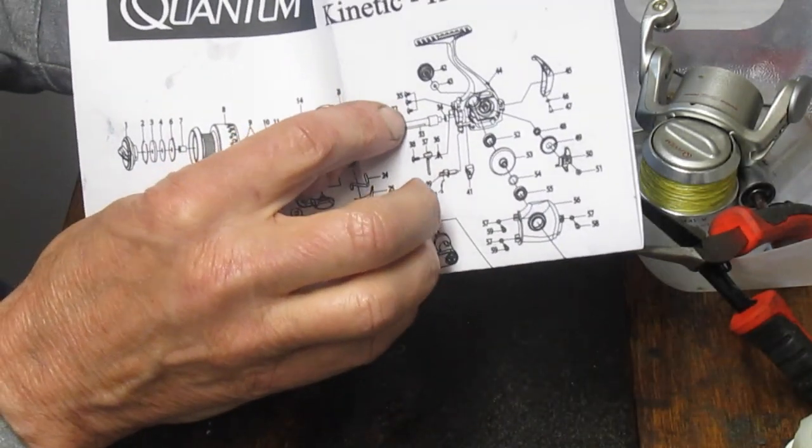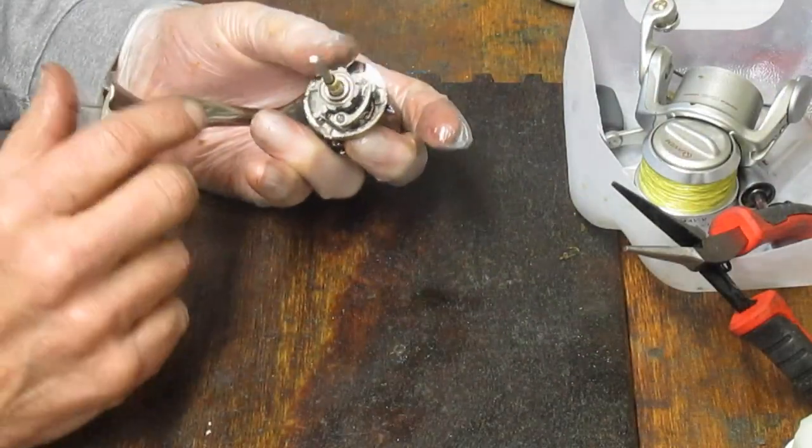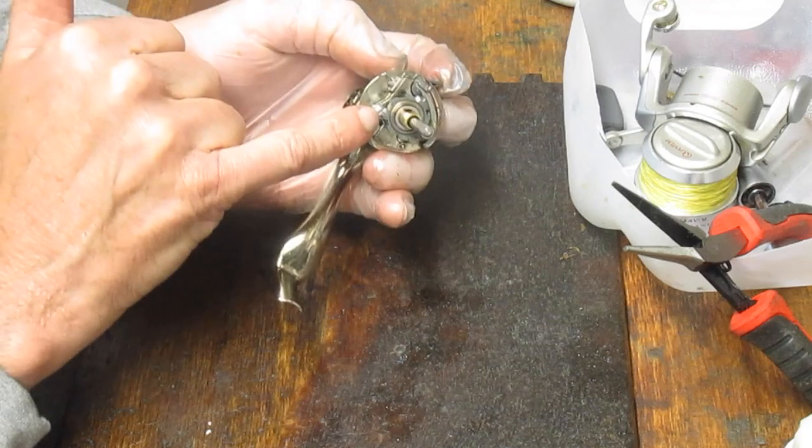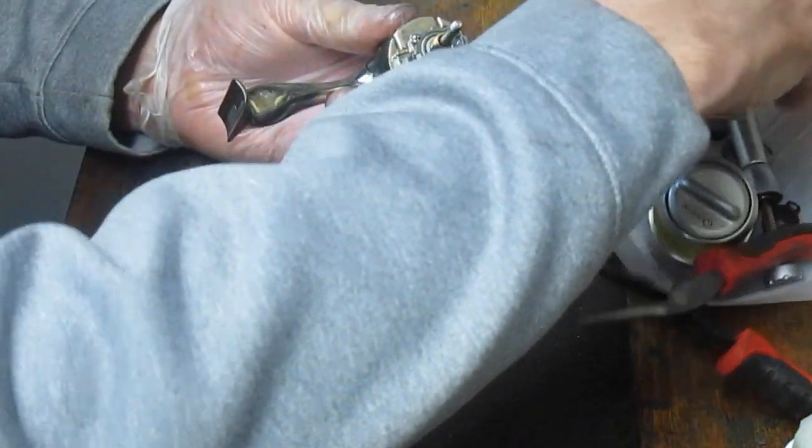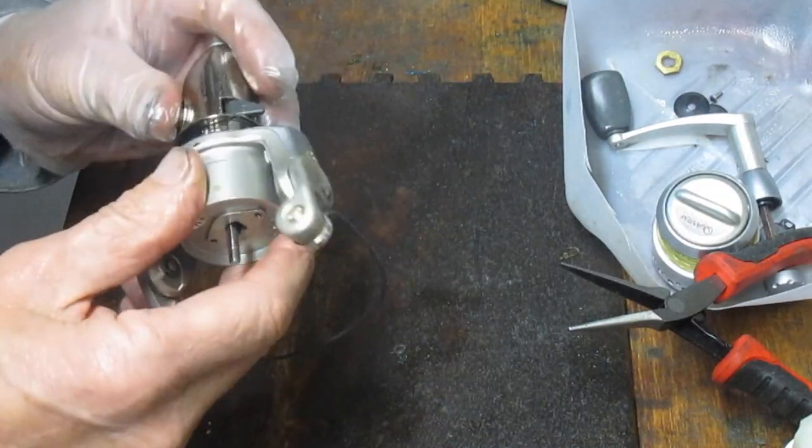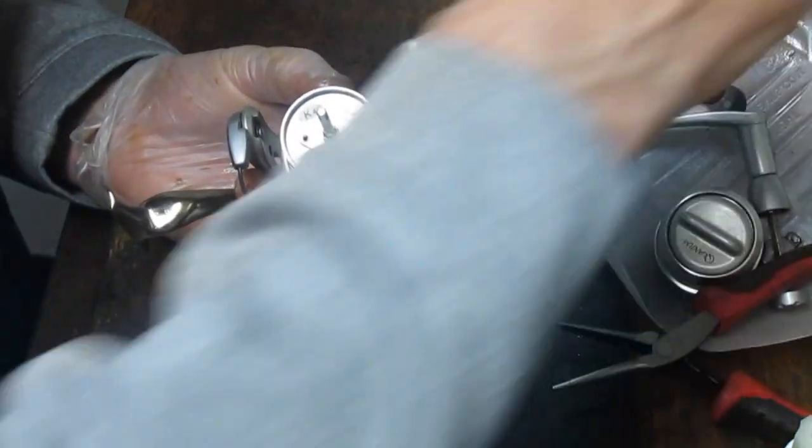If you wanted to take that out, there's three screws that hold that bearing in place and you could do it that way if you needed to replace. Actually, you can see two of those, one of those screws here. The other two are underneath that assembly. Okay. So that's the body of the reel. I kind of like what I see. We've got it all oiled up and we're going to go ready, ready to go fishing here.